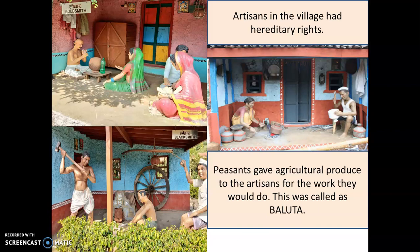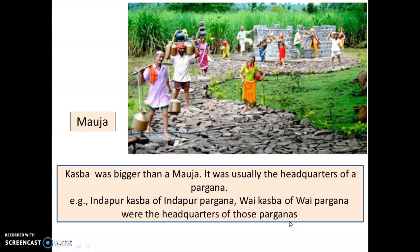For example, a farmer would need pots to store his grain, so he would go to the potter and say, 'Give me a pot, and in return I will give you some grain.' This agricultural produce given to the artisans for their work was called as Baluta. A village was called as a Mauja.